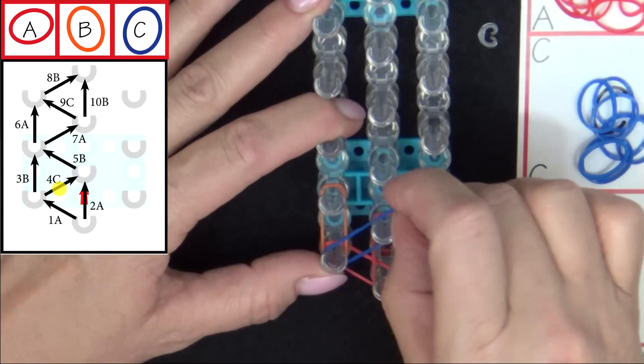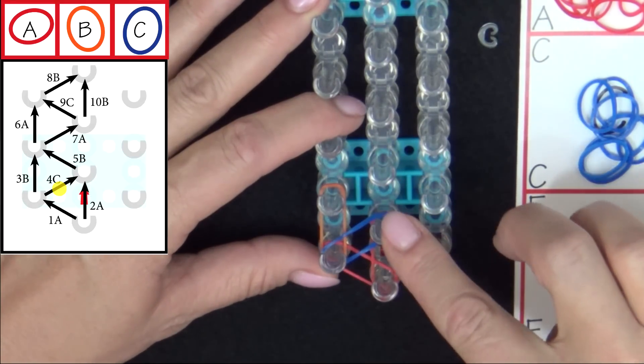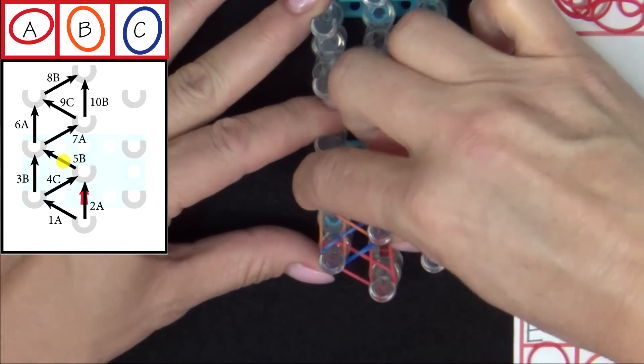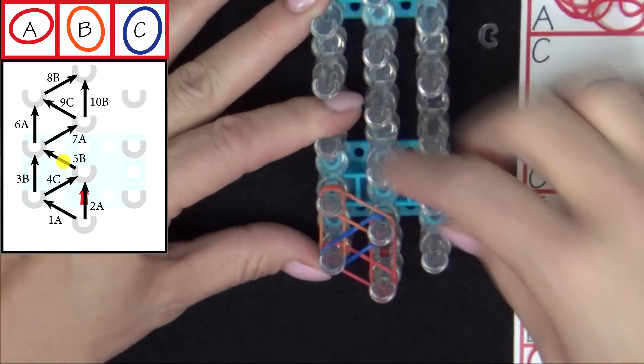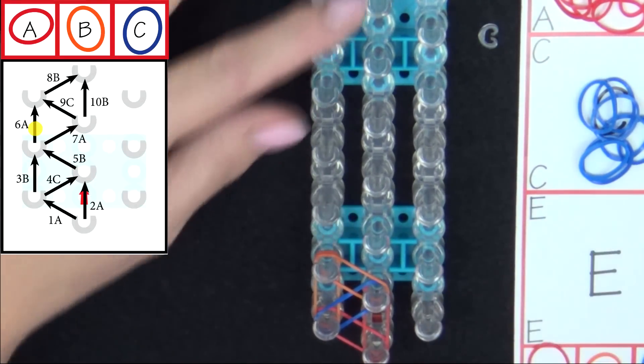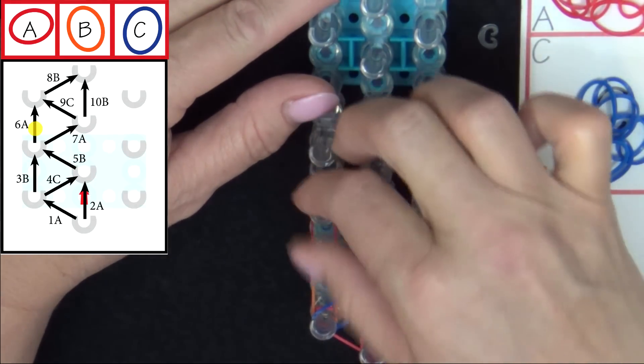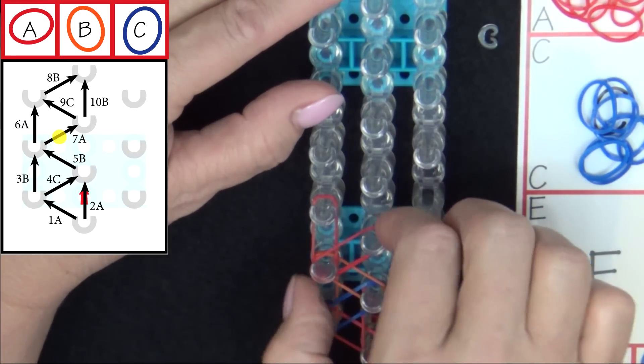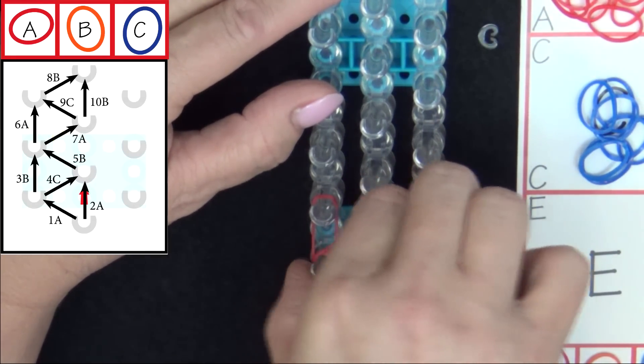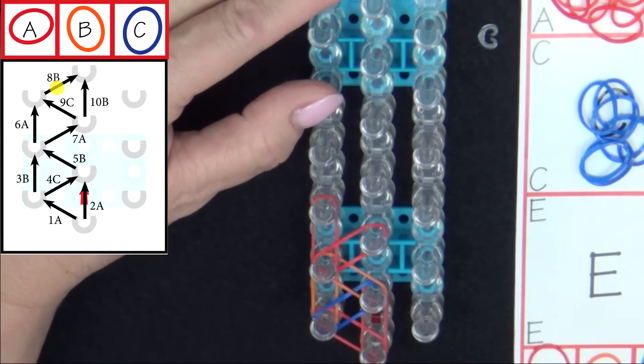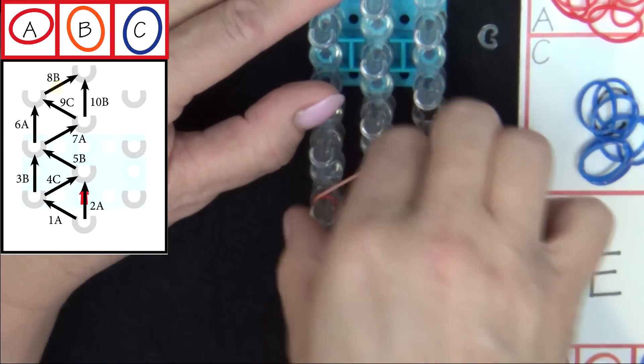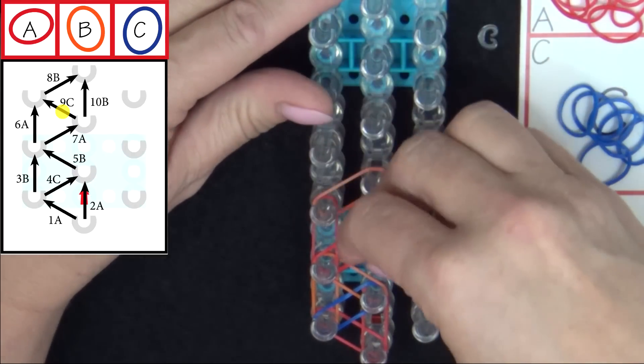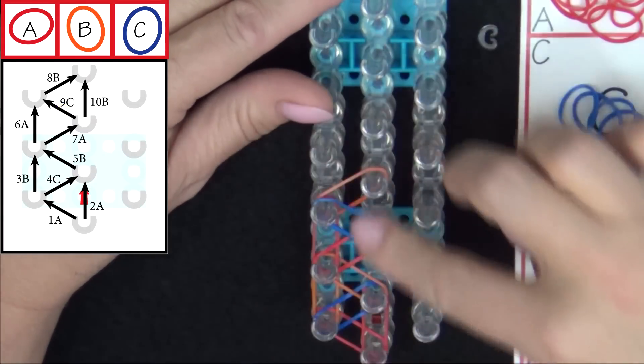4C goes across. Then 5B goes back. Then 6A. 7A. 8B. 9C. And 10B.